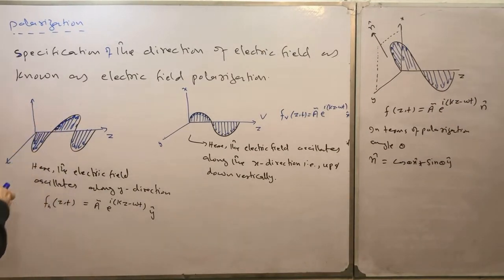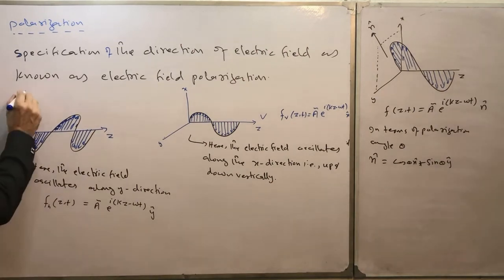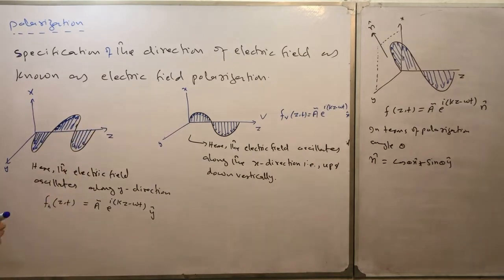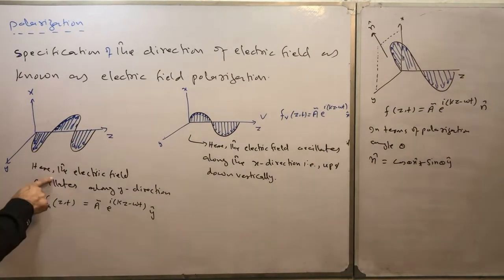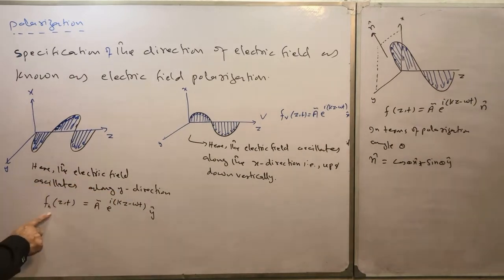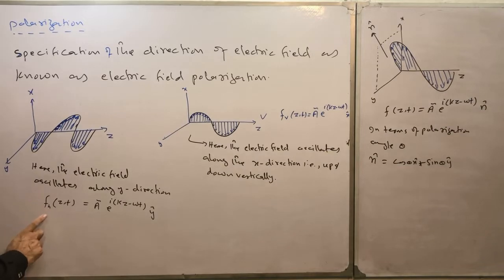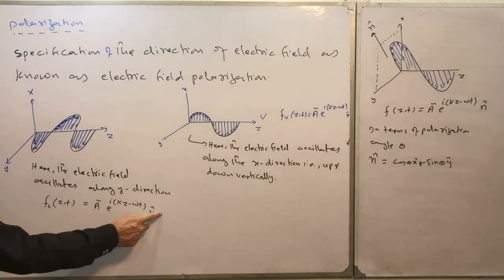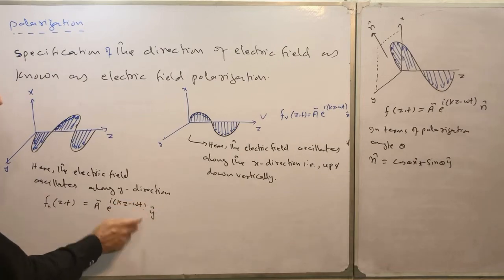Similarly, whenever the electric field is oscillating along the y-direction — this is x, this is y, and it oscillates along the y-direction — the electric field oscillates along the y-direction, and we may write the mathematical expression for the wave in the y-direction.